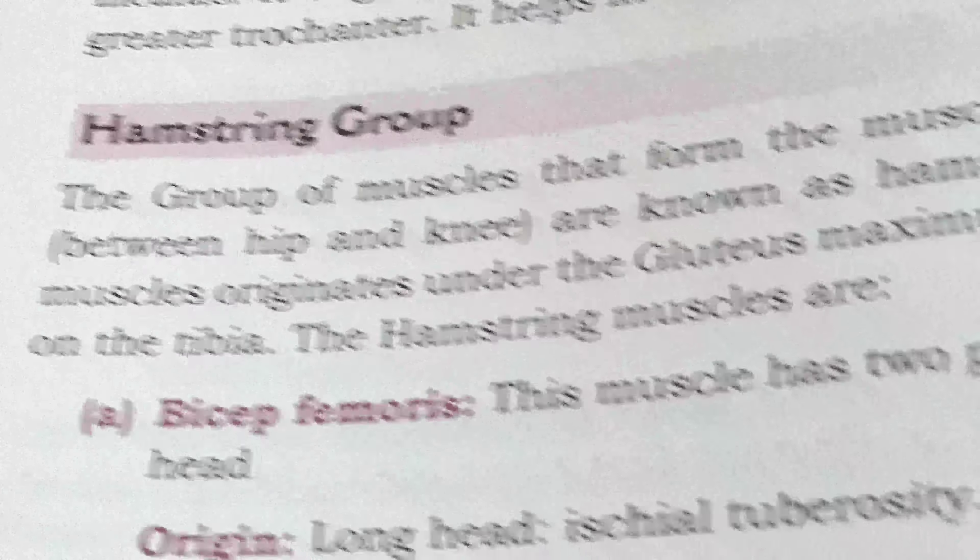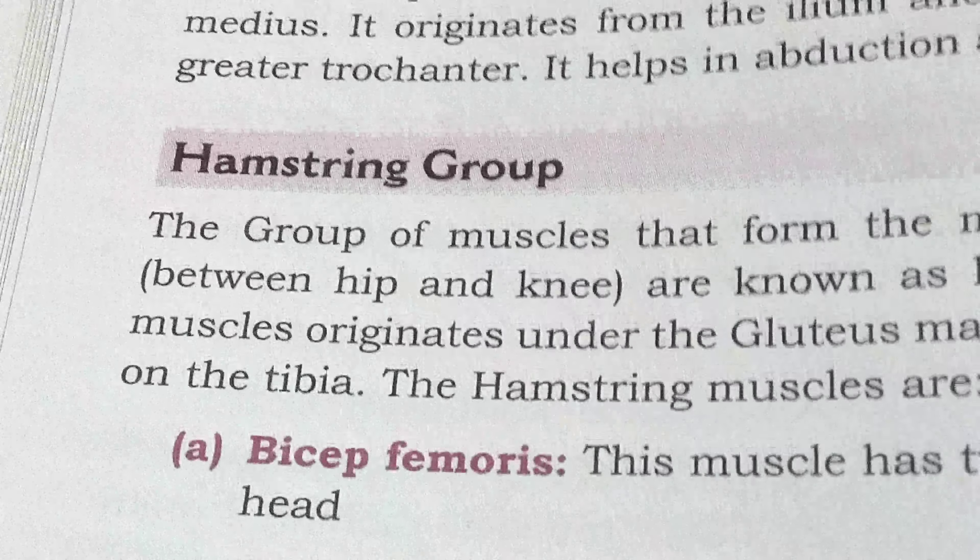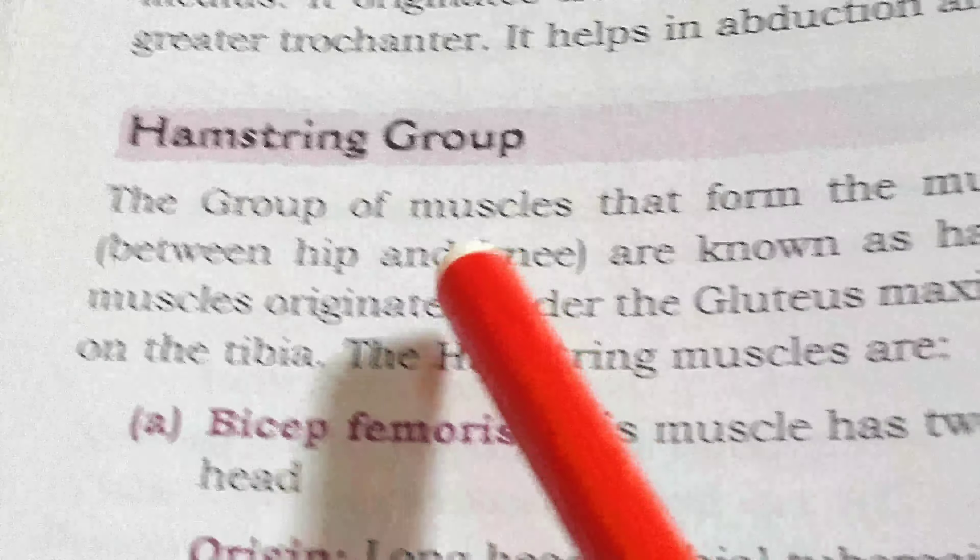Good morning students. Welcome back to Physical Education Classroom once again. Today I will start the hamstring group. The group of muscles that form the muscle mass of the posterior thigh are known as the hamstring group of muscles. Normally, these muscles are found in the posterior thigh region, between the hip and knee region.